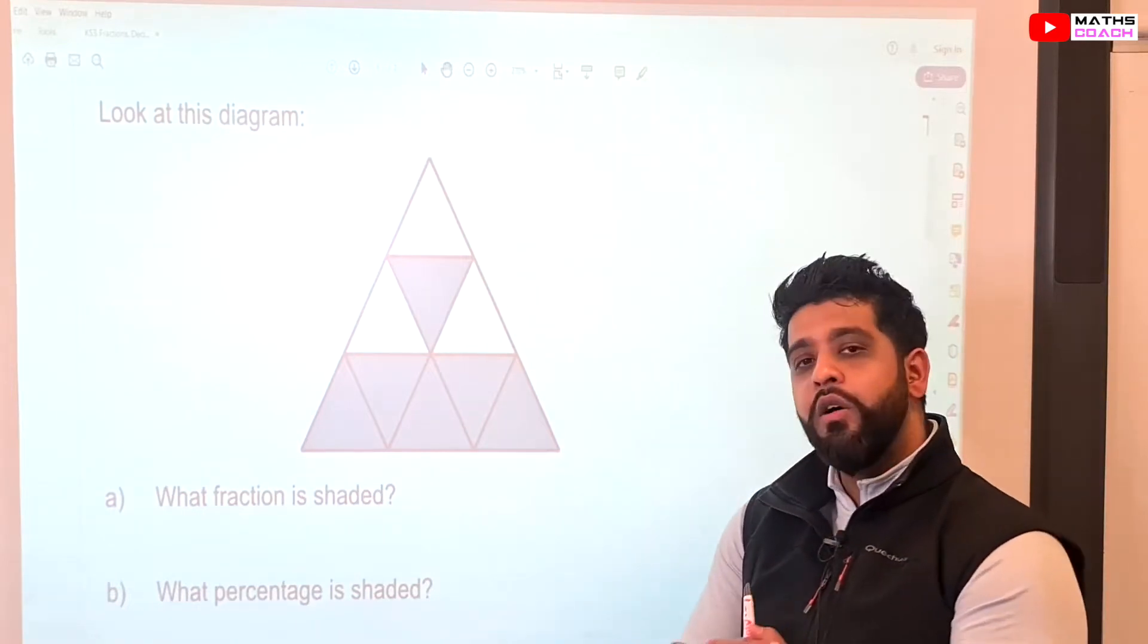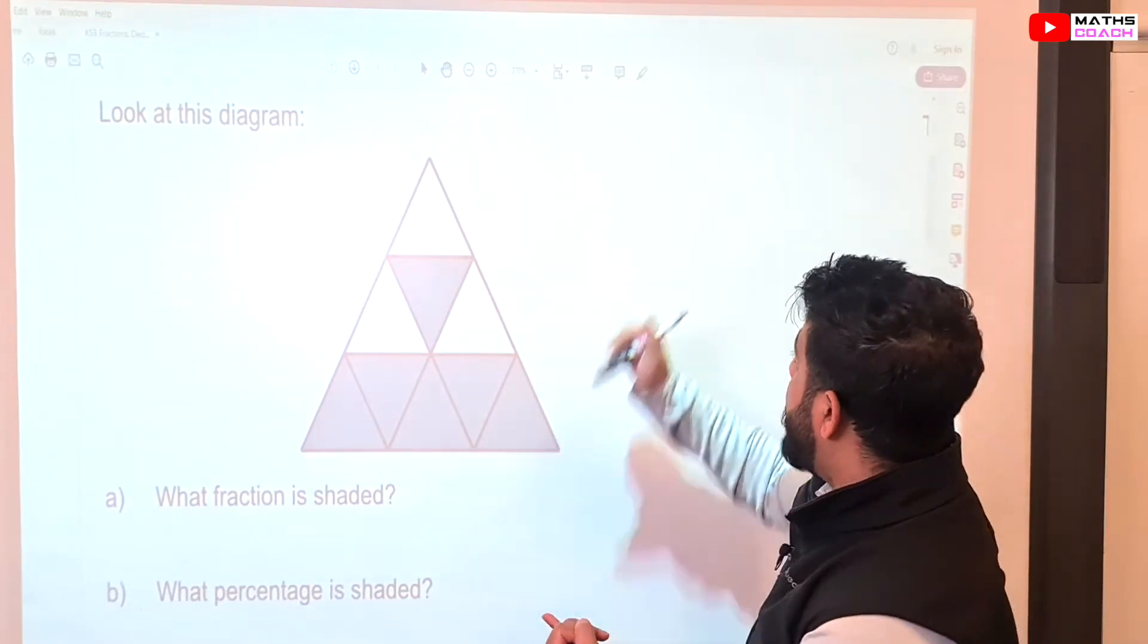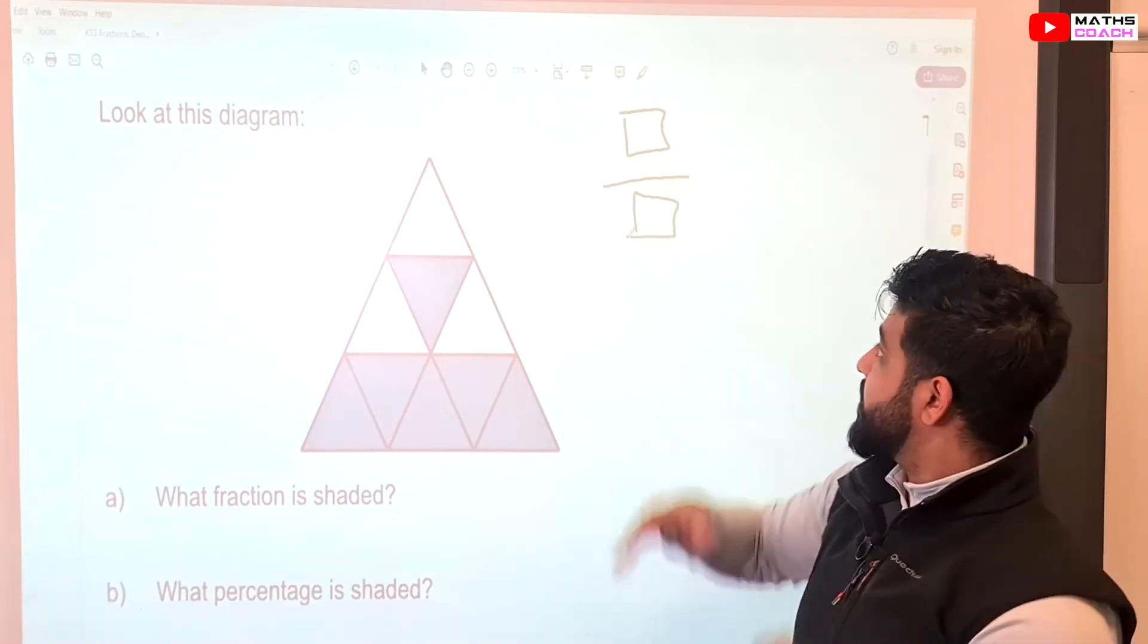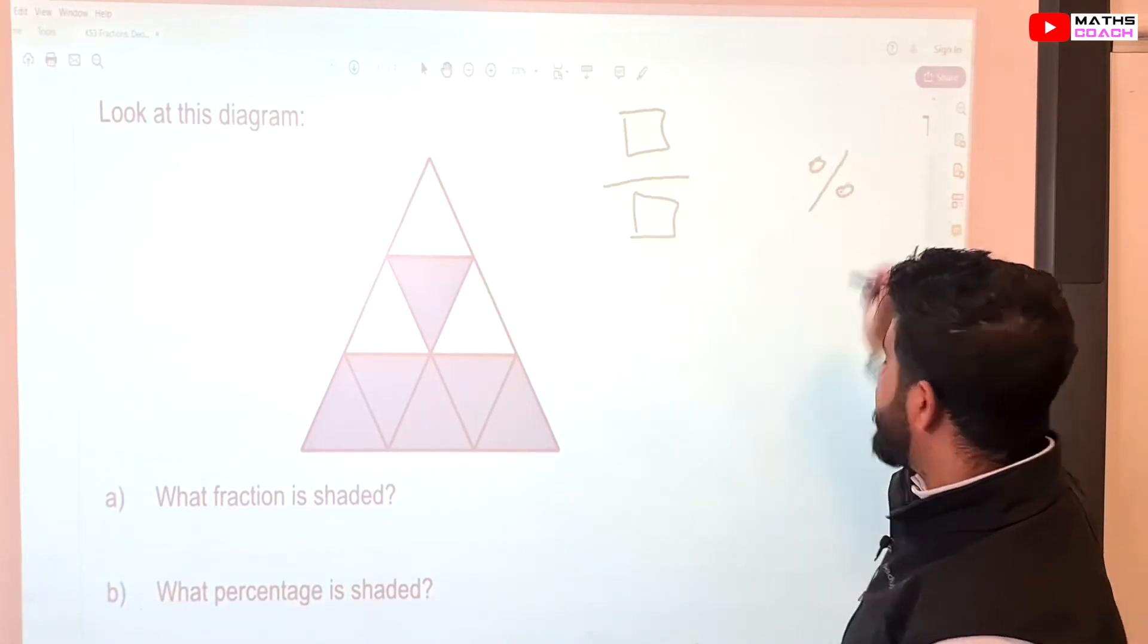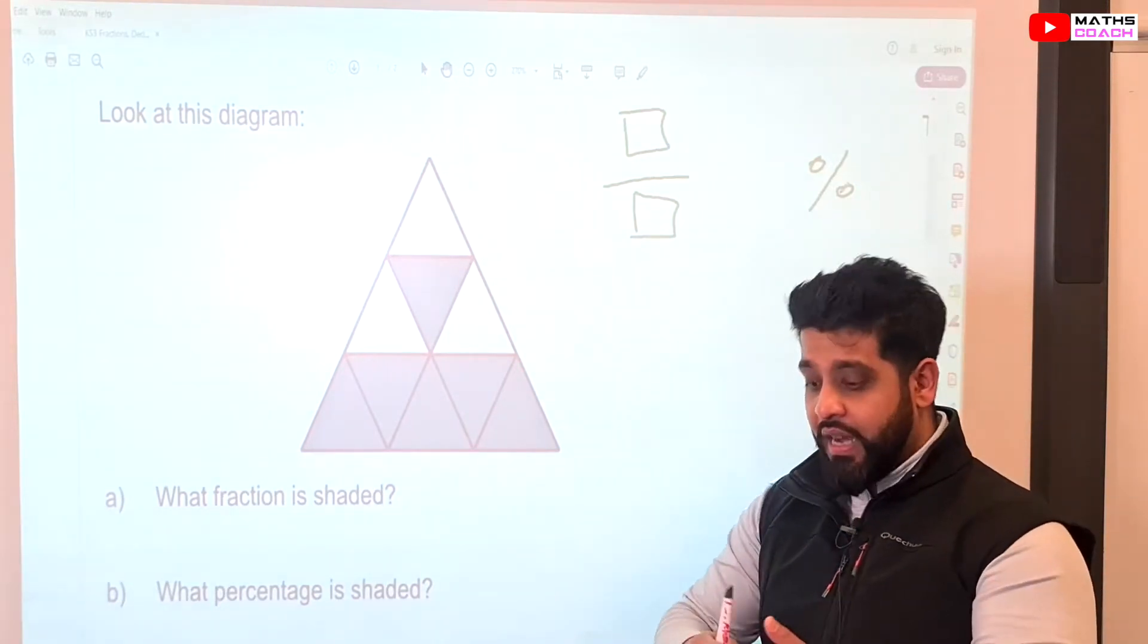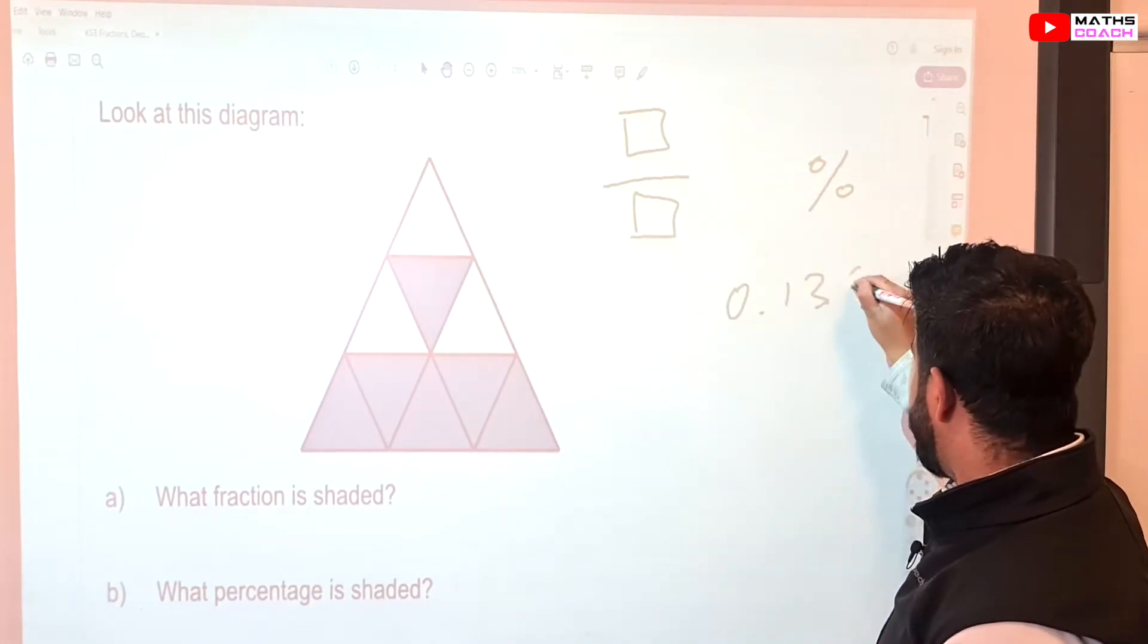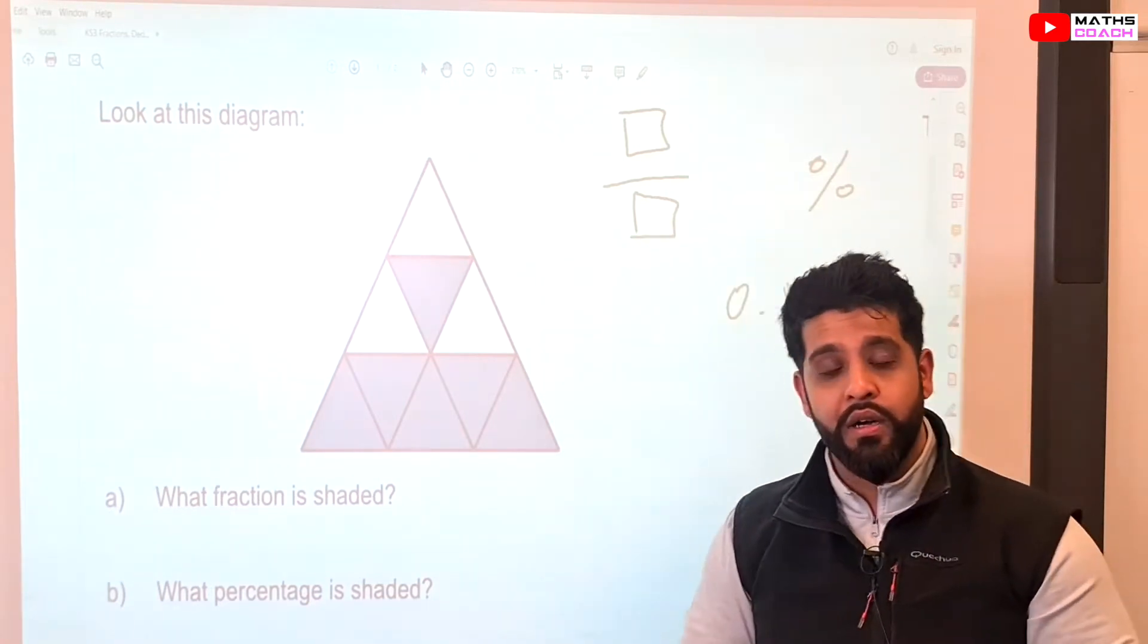Alright, so what do we know so far? Let's quickly do a recap. We know that fractions are written with a numerator and a denominator, something over something or something out of something. We know that percentages are written with this percentage sign and we know that decimals have decimal place values. So, it might be something like 0.00 something, like 1, 3, 5 for example. These are the three different things that we are going to be working with.